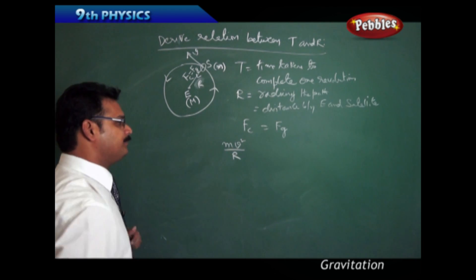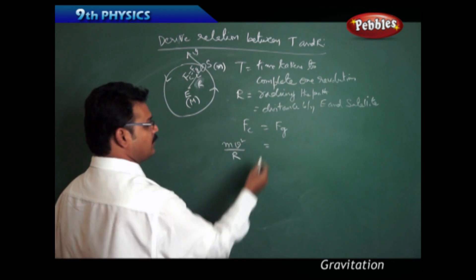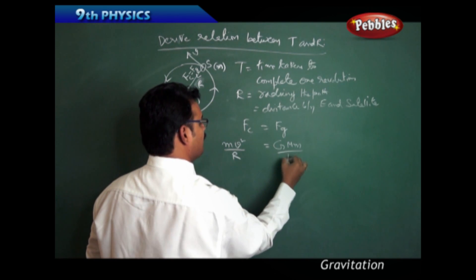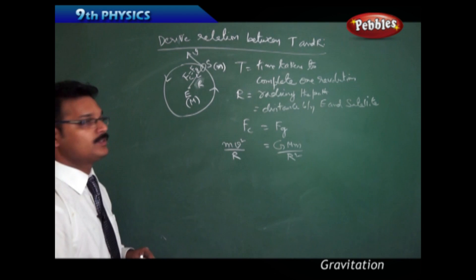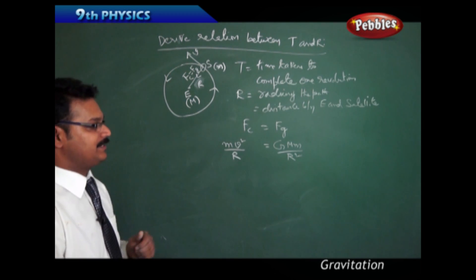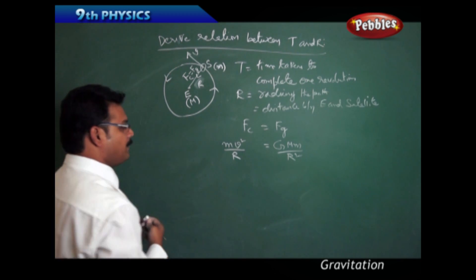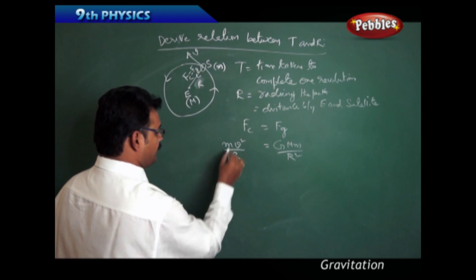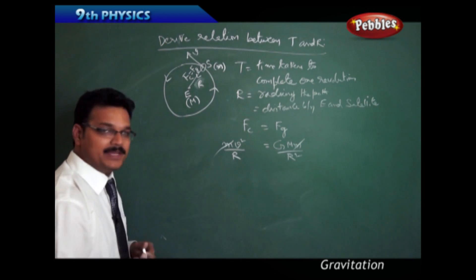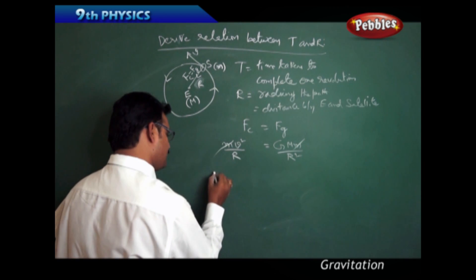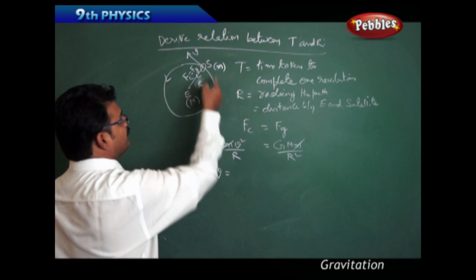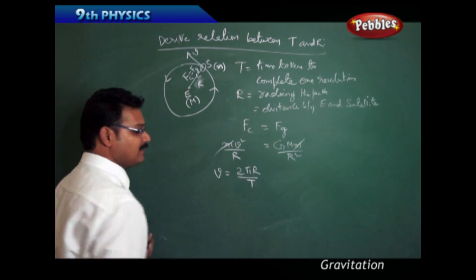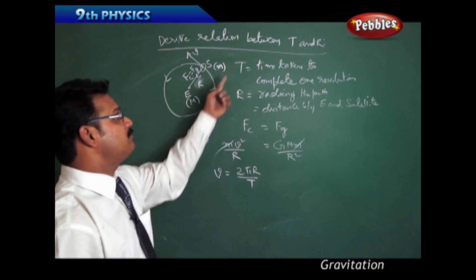This equals the gravitational force we already derived: G·M·m / R². Here we can cancel small m from both sides. We also know that v equals distance divided by time, and the distance for one revolution is the circumference 2πR, so v = 2πR/T. I've taken this expression because I want to find the relation between T and R.